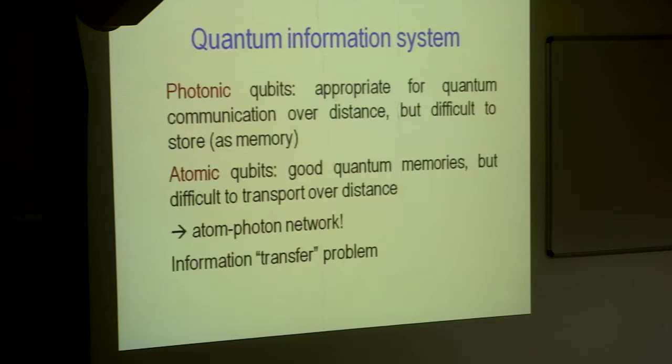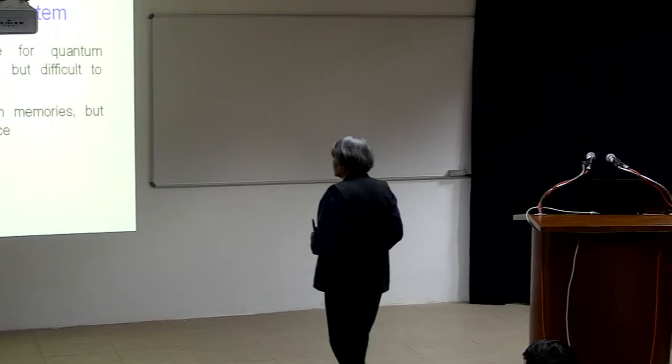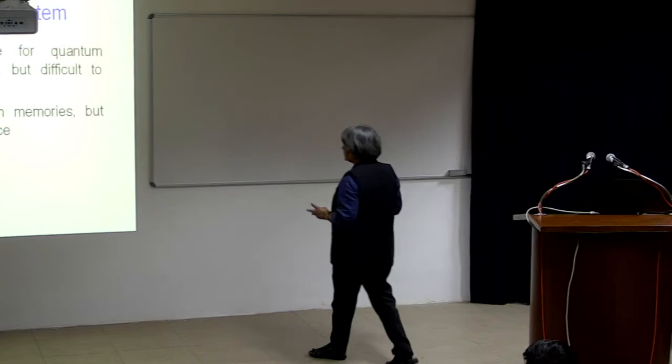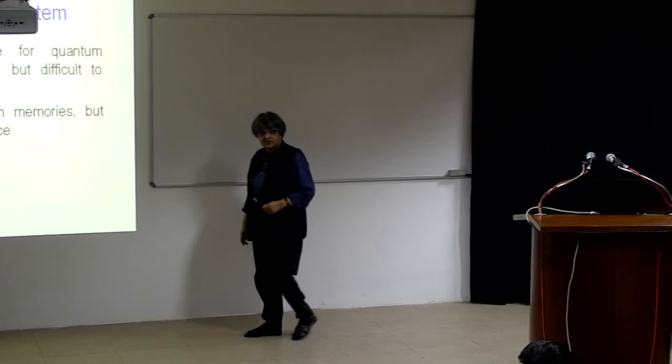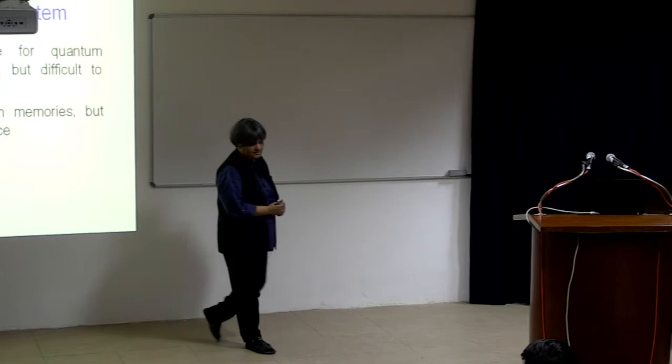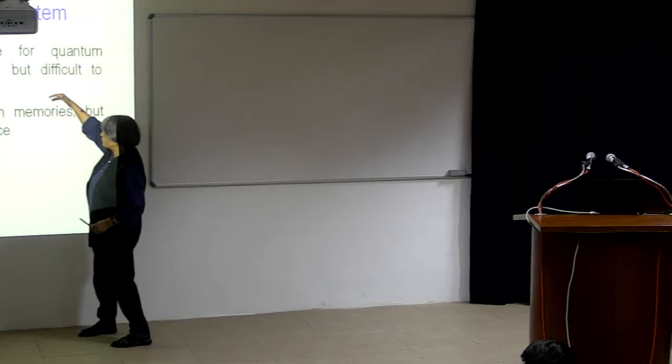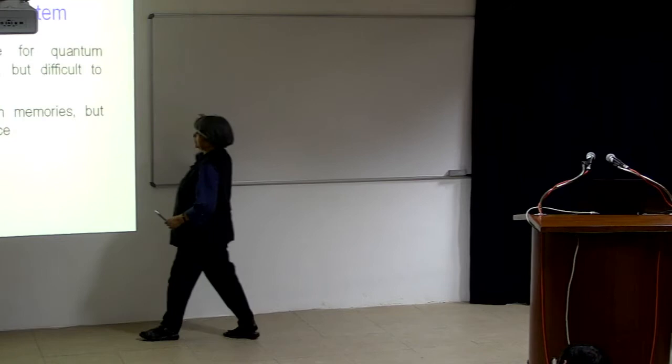A quantum information system of course, what people have been thinking about for a long time is that photonic qubits you use appropriate for communication over distance. A qubit is a quantum computer which is combinations of 0s and 1s more like not yes, not no, but maybes. If I can transfer those over a long distance without knowing what it is, normally you use photonic qubits. And to store, you use atomic systems. The information is getting stored as memories in atomic qubits. This would mean an atom photon network.